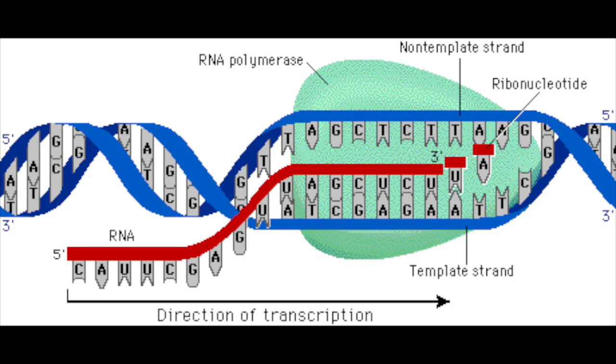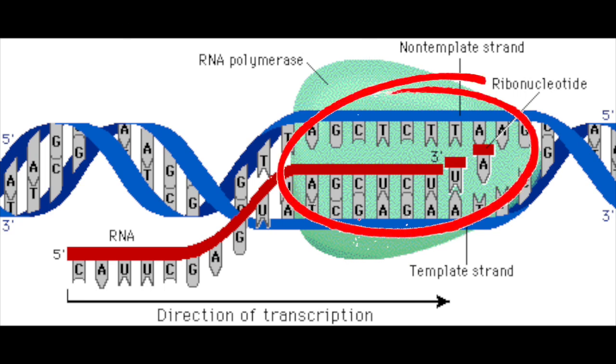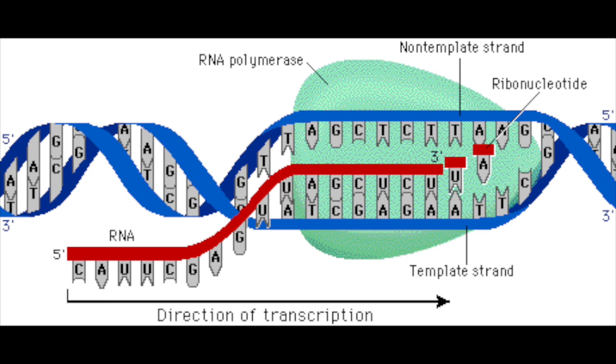So when we look at transcription a little closer, we see that an enzyme called RNA polymerase binds to a promoter region, which is a place in the DNA where the protein information starts. By pairing the bases C with G and A with U, a complementary mRNA sequence is made.